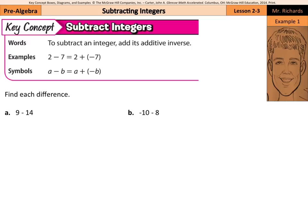Hi, Mr. Richards here. Today's lesson is on subtracting integers. Now in our key concept box, it says to subtract an integer, add its additive inverse. So 2 minus 7 becomes 2 plus negative 7. A minus B is A plus negative B. And there's a simple rule we can follow when it comes to subtracting integers, and that is keep, change, opposite.